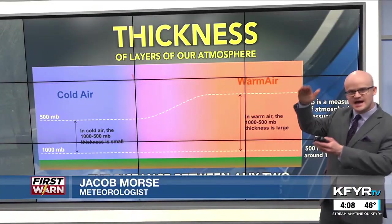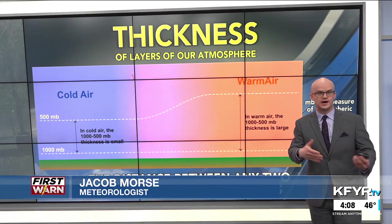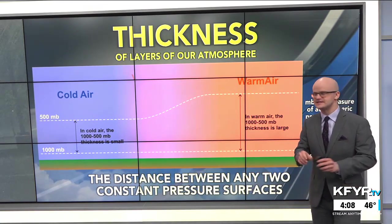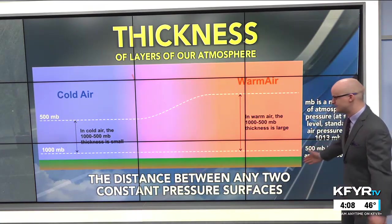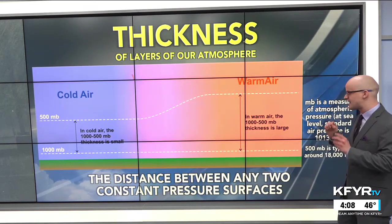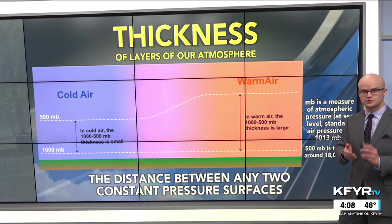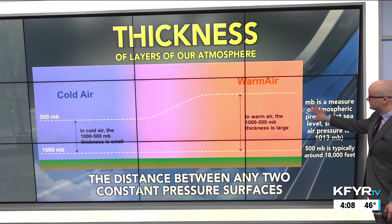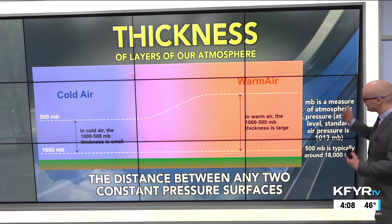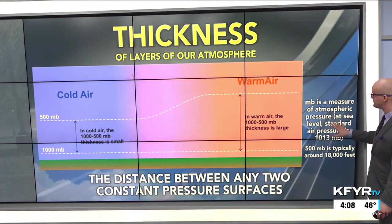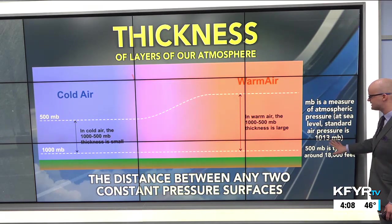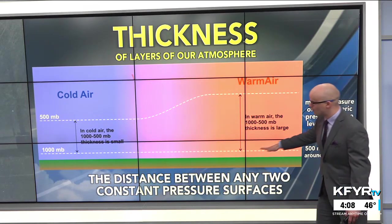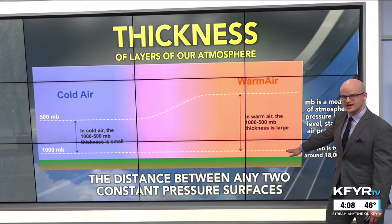Every day, we usually take a top-down approach to see what's going on globally and break that down into a more localized forecast. Thickness of layers of our atmosphere is defined as the distance between any two constant pressure surfaces. So we're talking about pressure in our atmosphere. The variable or unit of measure is millibars that meteorologists use — it's a measure of atmospheric pressure. At sea level, the standard air pressure is about 1,013 millibars.